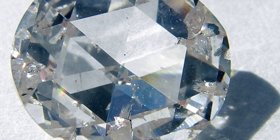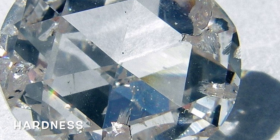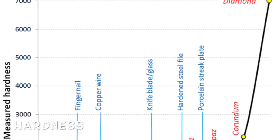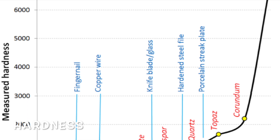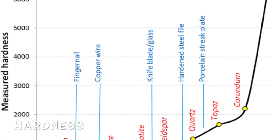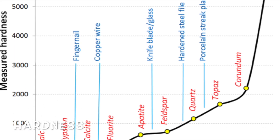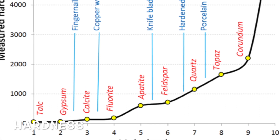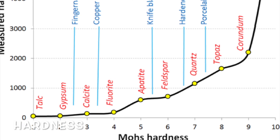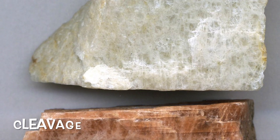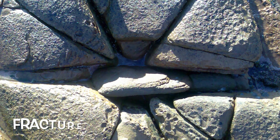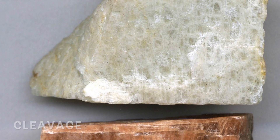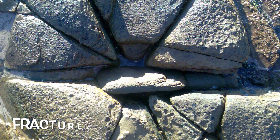Next we're going to talk about mineral properties. Some of the important properties for mineral identification include hardness — how hard a mineral is — which is on a logarithmic scale where talc is one, calcite is three, glass is five and a half, quartz is seven, and diamond, the hardest, is ten. We also have cleavage and fracture: if a mineral breaks along specific planes it is known as cleavage; random cracks and joints are known as fracture.